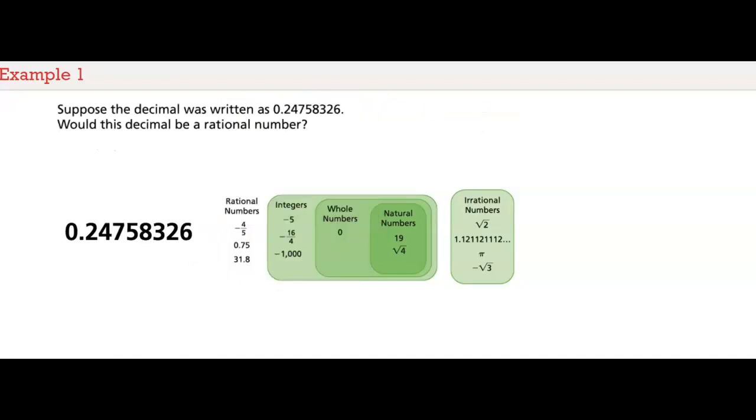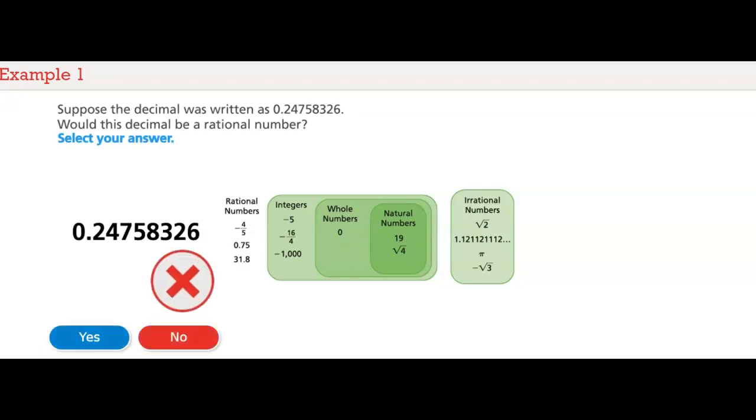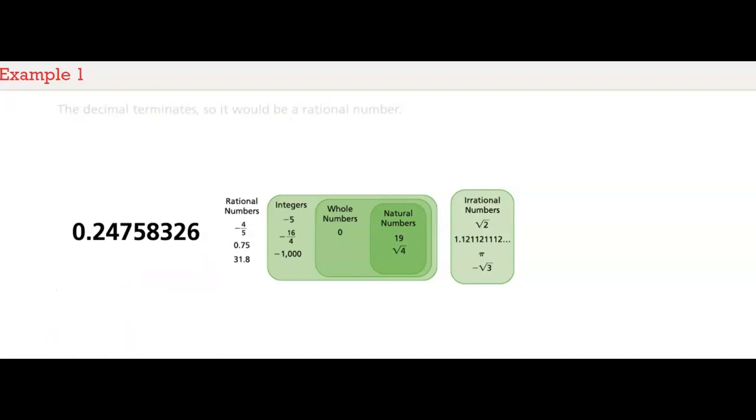Suppose the decimal was written as 0.24758326. Would this decimal be a rational number? Select your answer. Now the decimal terminates, so it would be a rational number.